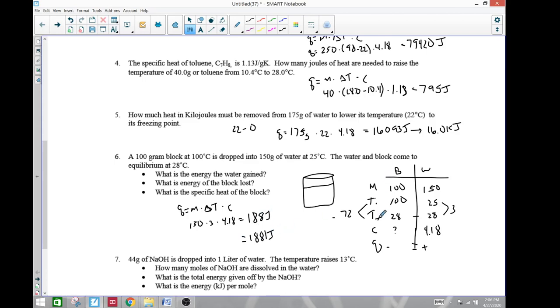1,881 is the joules that the block lost. So you can go negative if you want. So we're looking for the mass is 100 times the change in temperature is 72, that would be a negative 72, times the specific heat which is what they want. All right, so 1,881 divided by 100 divided by 72 equals 0.26. So equals 0.26 joules per gram degree Celsius.